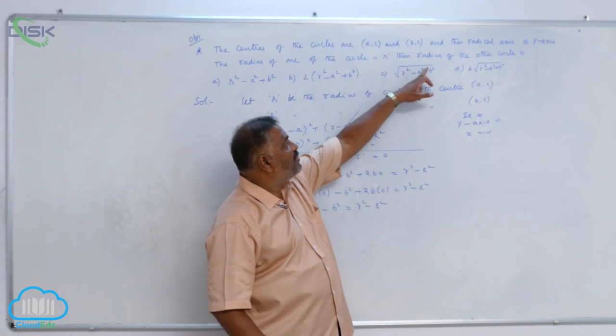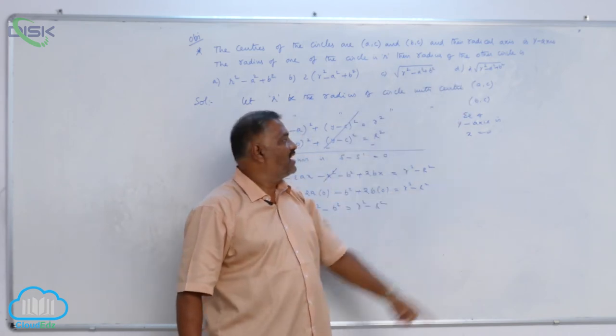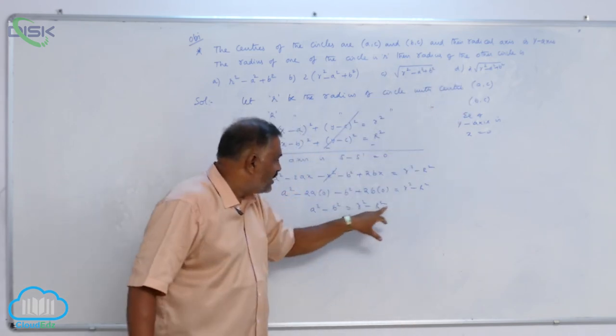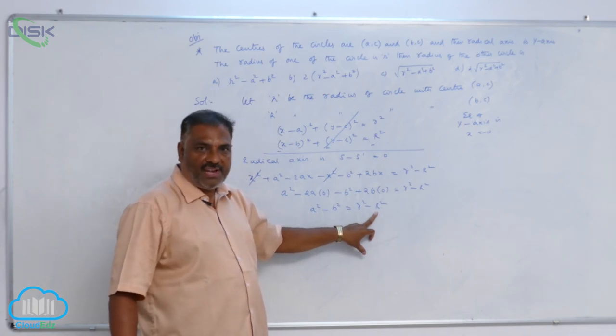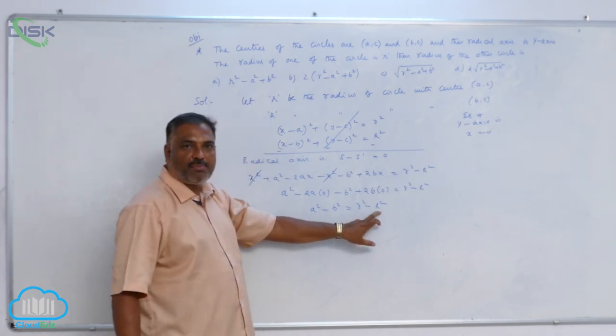Please remember, we require the radius of the other circle. So, the expected circle has capital R as radius. Now, we need to find out R².